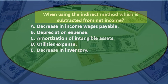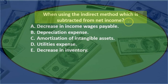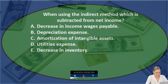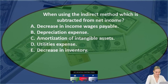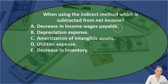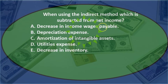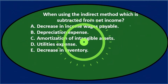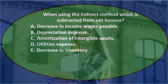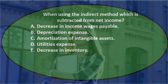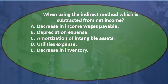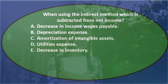When using the indirect method, which is subtracted from net income — meaning what makes net income go down? The rule is: if current assets go up, we bring down cash flows; if a current asset goes down, we bring up cash flows. It's the opposite for liabilities — if liabilities go up, we increase cash flows; if liabilities go down, we decrease cash flows.